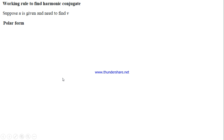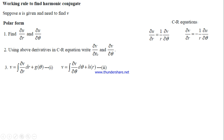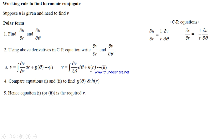The working rule for the polar form works in exactly the same way. Here u is a function of r and θ. We find ∂u/∂r and ∂u/∂θ, then use the polar CR equations: ∂v/∂r = -(1/r)·∂u/∂θ and ∂v/∂θ = r·∂u/∂r. We then integrate to get two expressions for v with constants g(θ) and h(r), and compare them to find the harmonic conjugate.